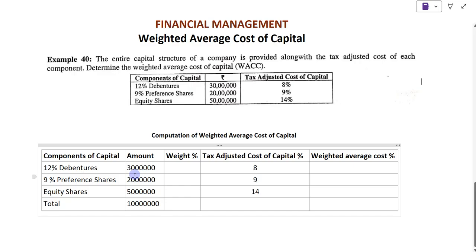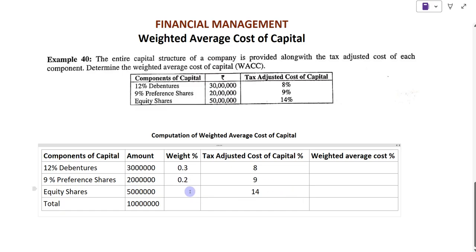How to find the weight proportion percentage: divide the amount of each component by the total. So 12% debentures — 30 lakhs divided by total — gives 0.3. Similarly, preferences give 0.2, and equity shares give 0.5.